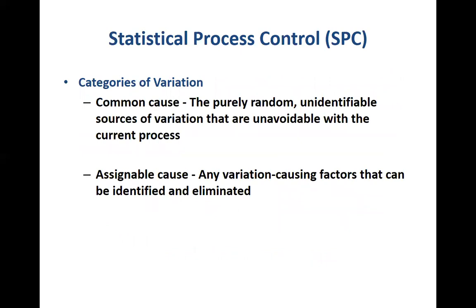When we are trying to bring a process in control, we have to be aware that the reason something is not in control could be due to random variations — unidentified random variations which are unavoidable, part of the process that will exist irrespective of whatever you do. These are called common causes, and we cannot do too much about them. What we are really after are assignable causes — causes for which factors can be identified and eliminated. We can determine whether it is a certain machine, lack of training, or some other identifiable cause driving out-of-control situations, and this is what SPC helps us find.